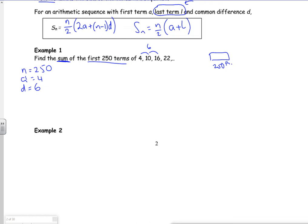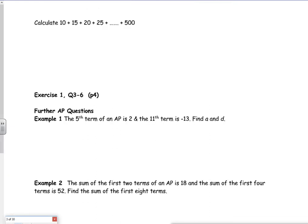Right. So if you use the sum of the 250th terms, it's 250 over 2, 2 lots of 4, plus 250 minus 1, lots of 6. If you put that into your calculator and work it out, it gives you 187,750. There you go.